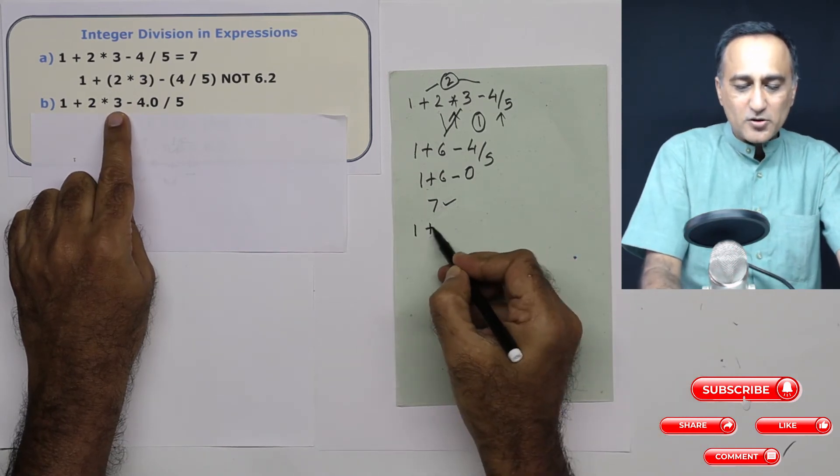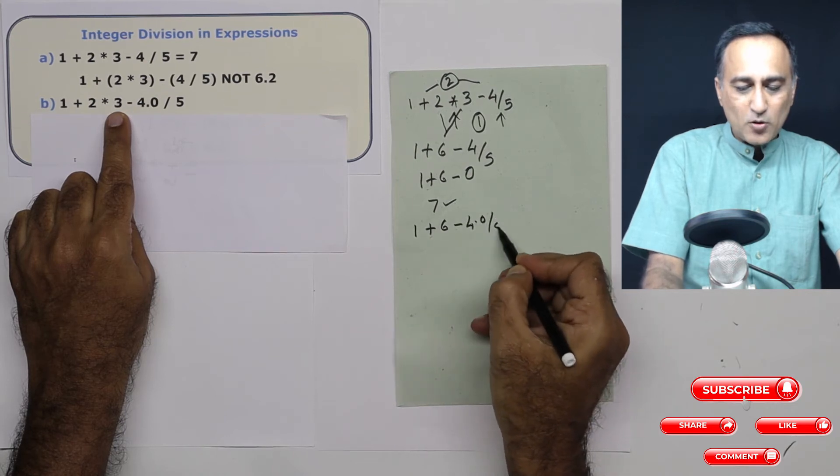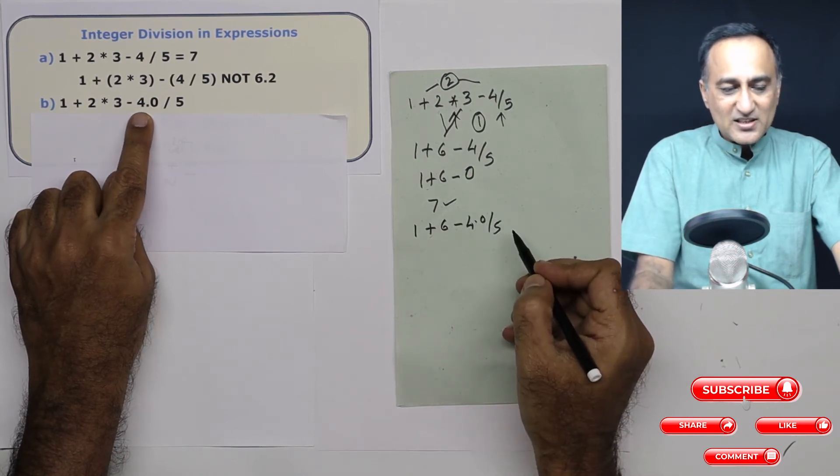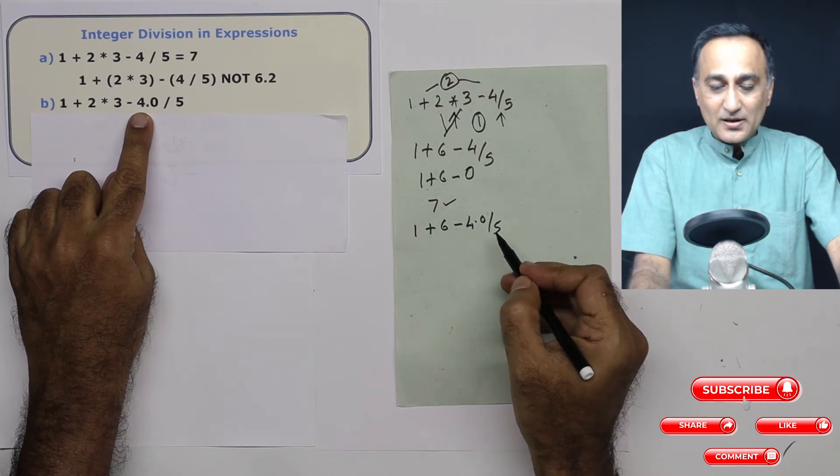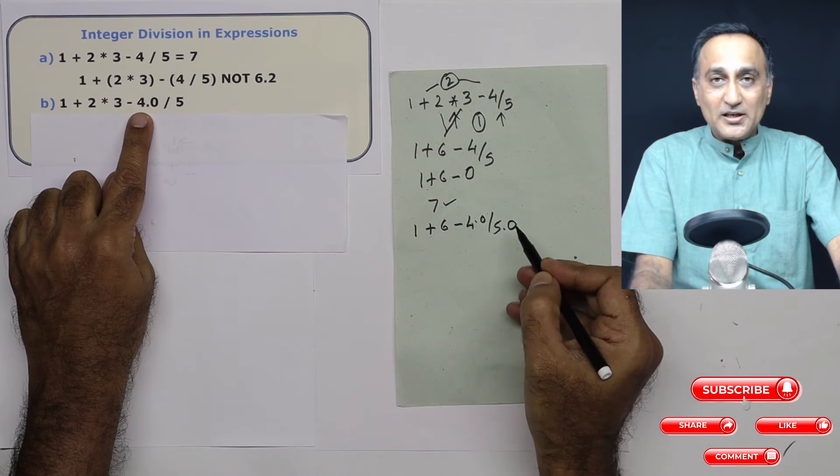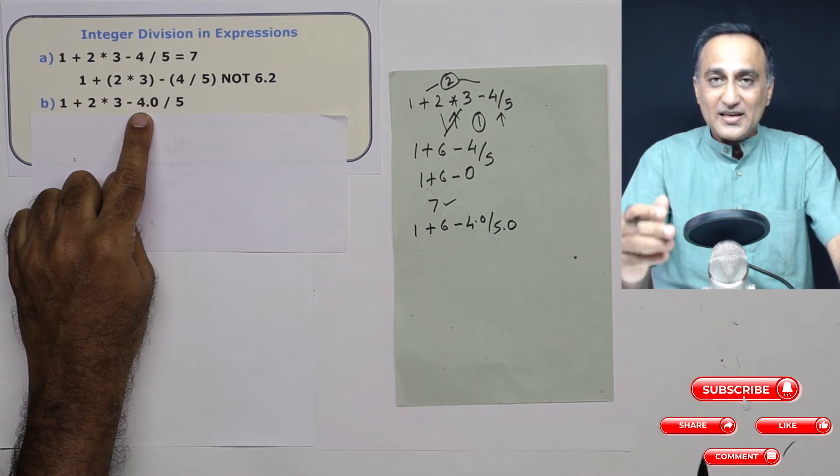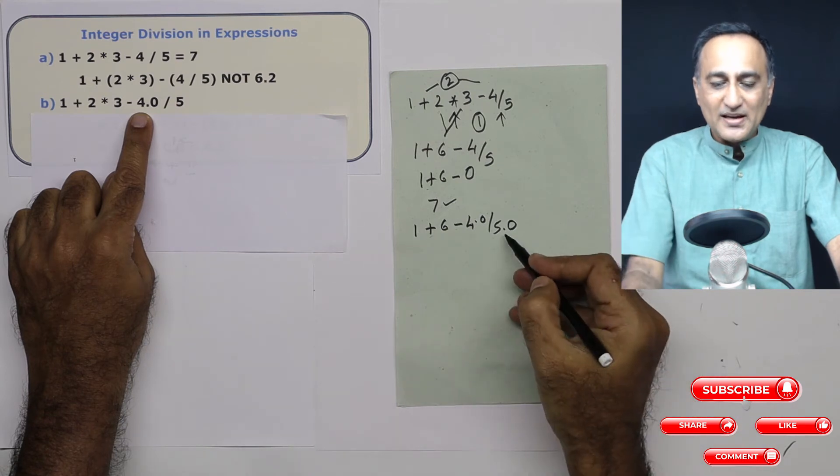So now this looks 1 plus 6 minus 4.0 upon 5. Since the numerator is a real number, it will forcibly convert the denominator also into a real number because the type of real number is bigger or considered to be bigger than integers.